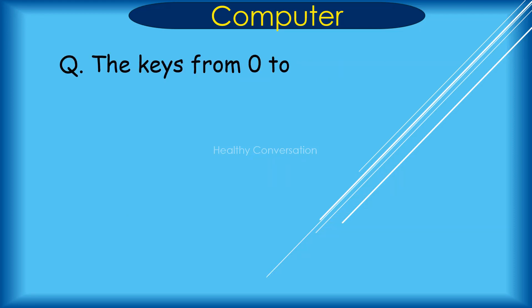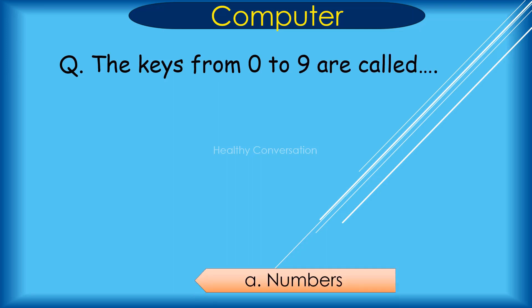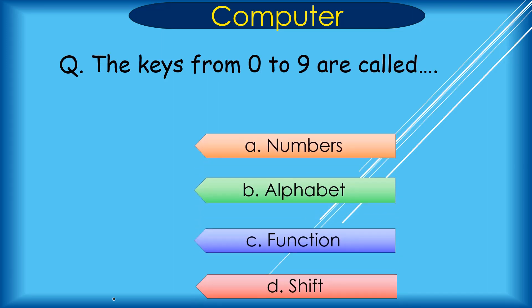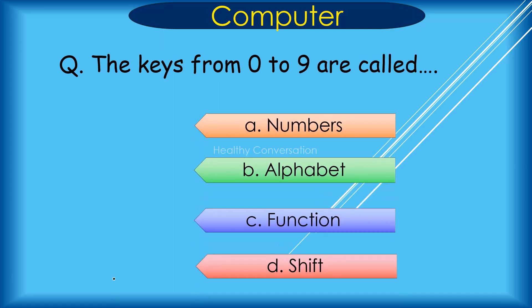Question: The keys from 0 to 9 are called dash. A. Numbers, B. Alphabet, C. Function, D. Shift. Correct answer is A. Numbers.